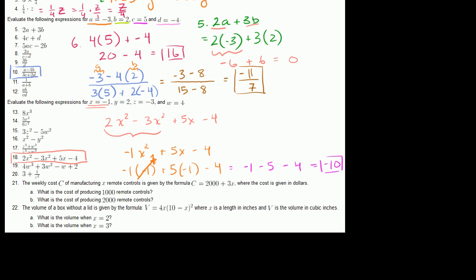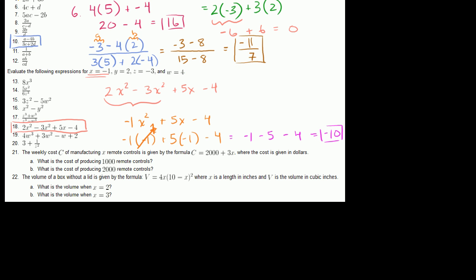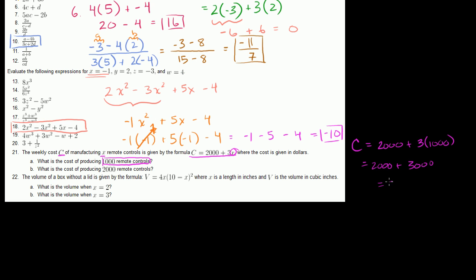The weekly cost C of manufacturing x remote controls is given by the formula: C equals 2,000 plus 3 times x, where cost is in dollars. Part A: what is the cost of producing 1,000 remote controls? We substitute x equals 1,000 into the formula: C equals 2,000 plus 3 times 1,000, which is 2,000 plus 3,000, equaling $5,000.